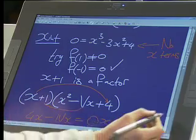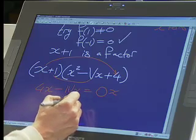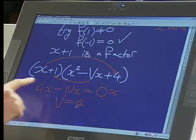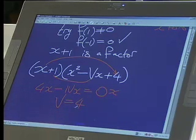So what must v be then? Okay. v equals to minus 4. No. v equals to 4. Not minus 4. 4 minus 4 is 0.